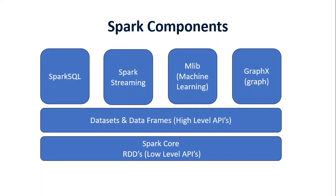There are additional libraries built on top of Spark Core. These libraries are Spark SQL, Spark Streaming, Machine Learning, and GraphX. Spark SQL is basically a library which allows SQL users to work in Spark. Spark Streaming is for real-time data. Machine Learning is for doing feature engineering and AI-related things. All of these components will be discussed in detail in this video series.